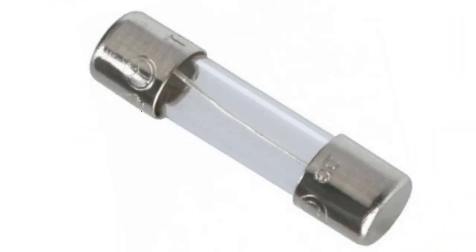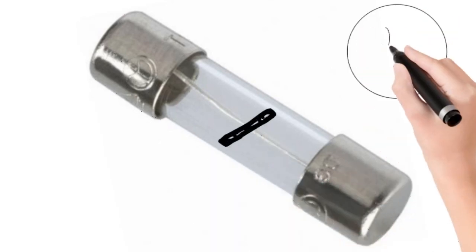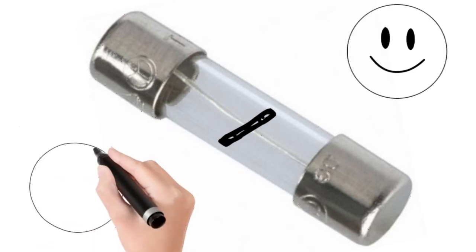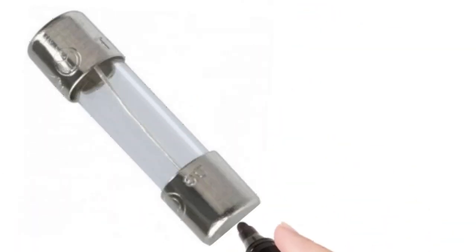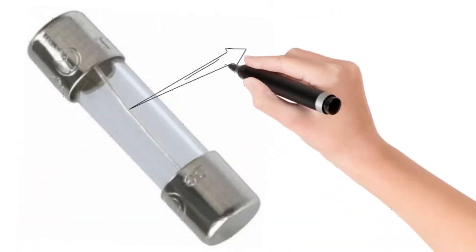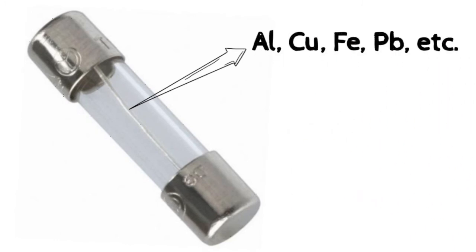Next is the fuse, which has a thin wire inside it with a very low melting point. This causes it to melt when a higher current flows through it than required, preventing short circuits in our house and keeping us safe. It is usually made of metals or alloys such as aluminum, copper, iron, lead, or any other low melting point material.